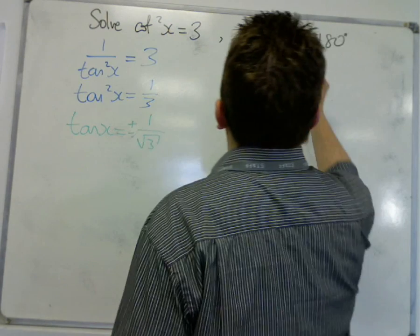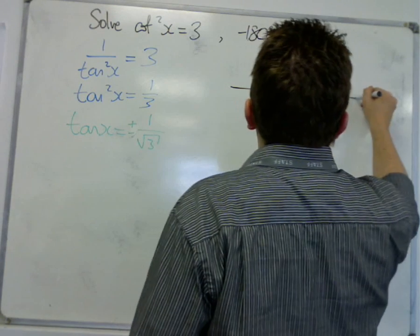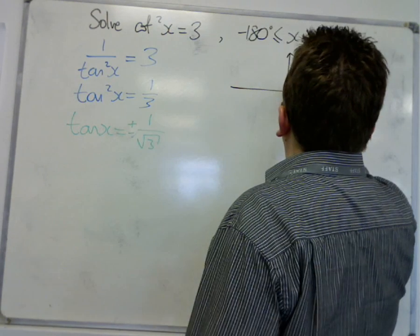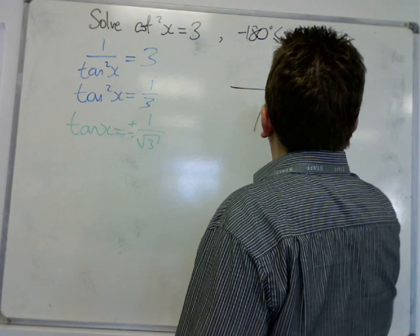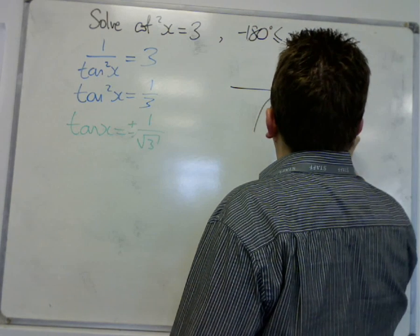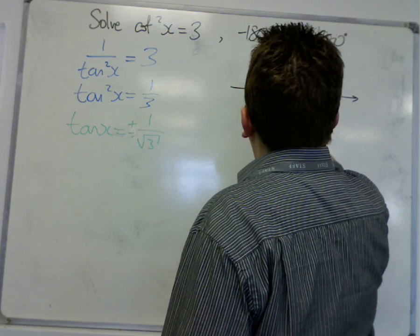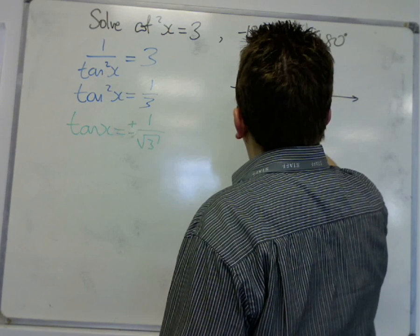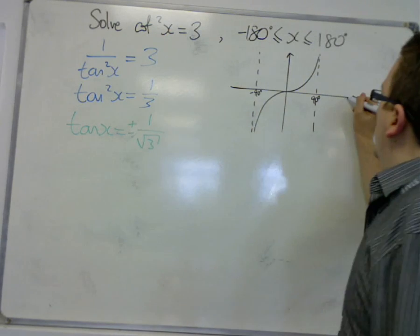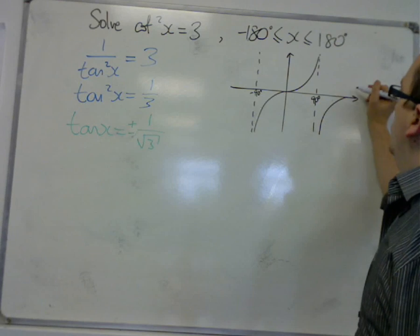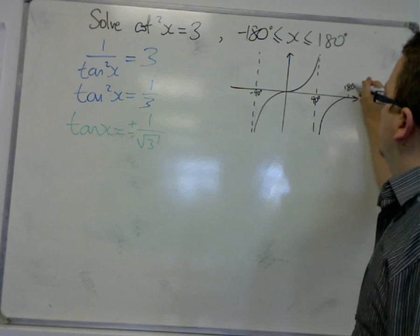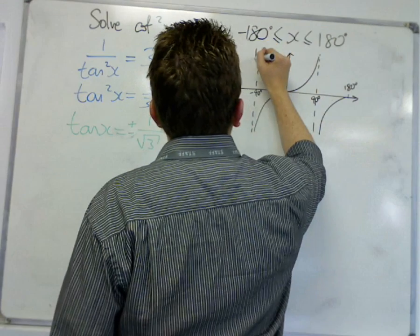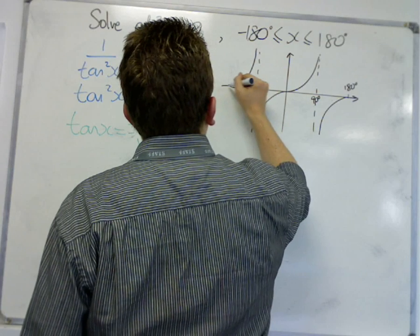Now what does tan look like between minus 180 and 180? So here is tan between 90 and minus 90. So here it is to 180, and here it is to 180 over this side.